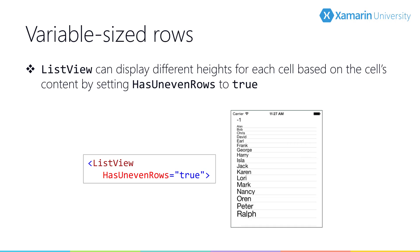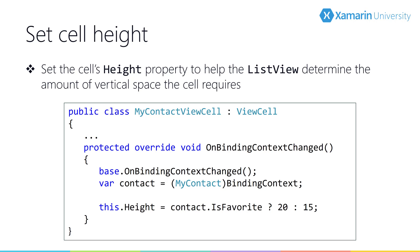Since the height property is not a bindable property, you can't use data binding in XAML, which means you'll need to create an actual derived class from view cell and set that property in code. The key code is in the override of OnBindingContextChanged — called when the data mapped to the cell is being altered. Here we use the text from the binding context, perform a calculation, and size the row using the height value when HasUnevenRows is set to true.